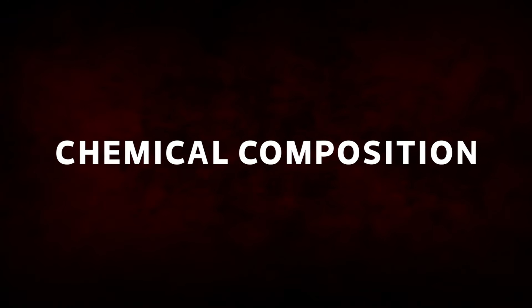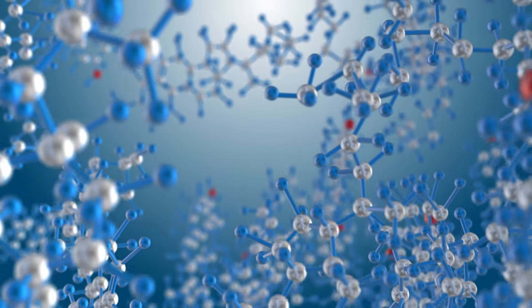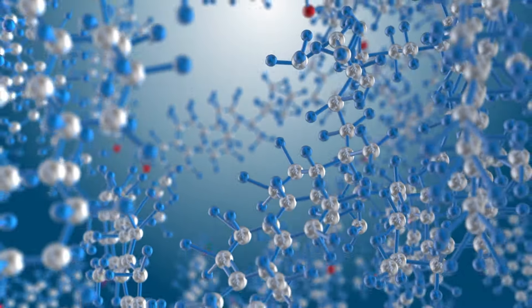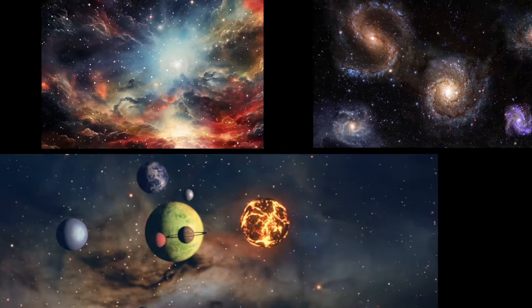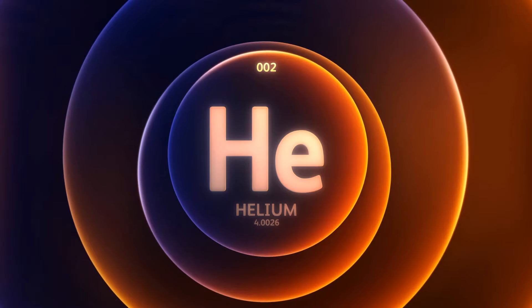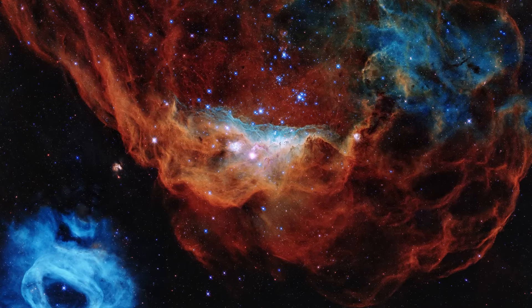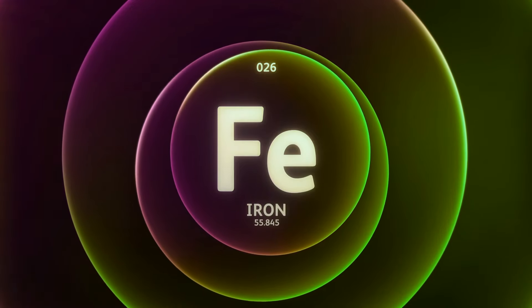Chemical Composition. Chemical composition refers to the types and relative abundances of chemical elements that make up a substance or an object, such as stars, galaxies, or planets. These elements include hydrogen, helium, and trace amounts of heavier elements such as carbon, oxygen, nitrogen, and iron, among others.